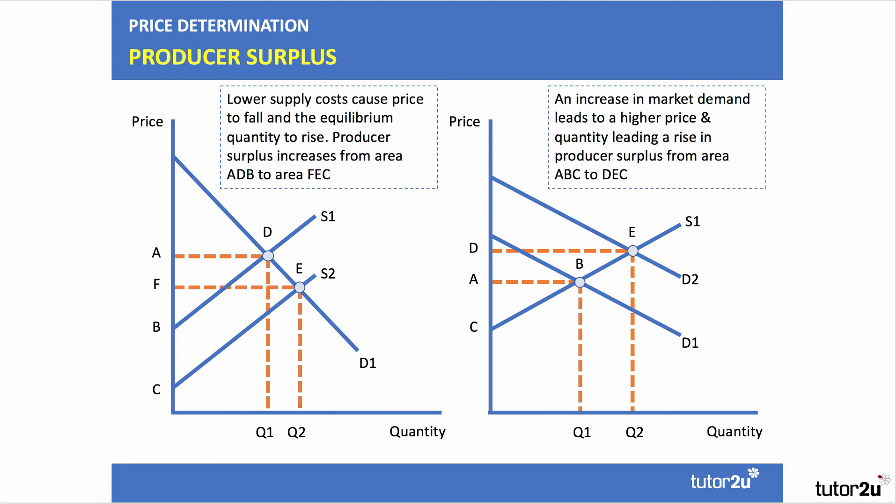On the right-hand side, an upward shift of demand with supply conditions remaining the same. The market price goes up from A to D, there's an increase in quantity bought and sold from Q1 to Q2, and producer surplus will go up from area A, B, C to area D, E, C. Higher demand increases price and increases producer surplus.